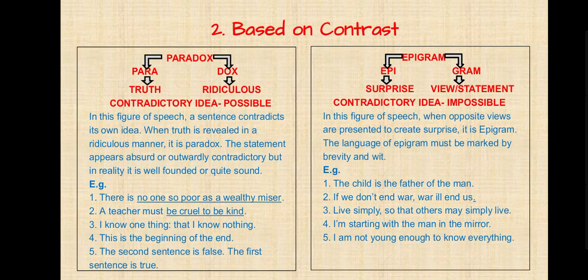Now the second type of figures of speech based on contrast. Paradox and epigram are given in this type. 'Para' means truth, 'dox' means ridiculous. In paradox, the idea given is possible; while in epigram, 'epi' means surprise and 'gram' means few statements — the contradictory idea the poet gives is impossible. In paradox, a sentence contradicts its own idea. When truth is revealed in a ridiculous manner it is paradox. The statement appears absurd or outwardly contradictory, but in reality it is well-founded.